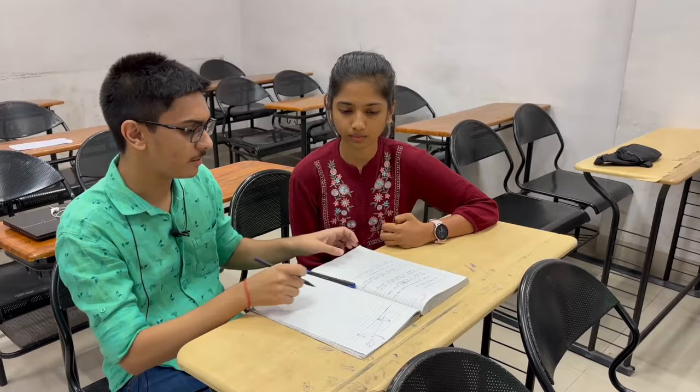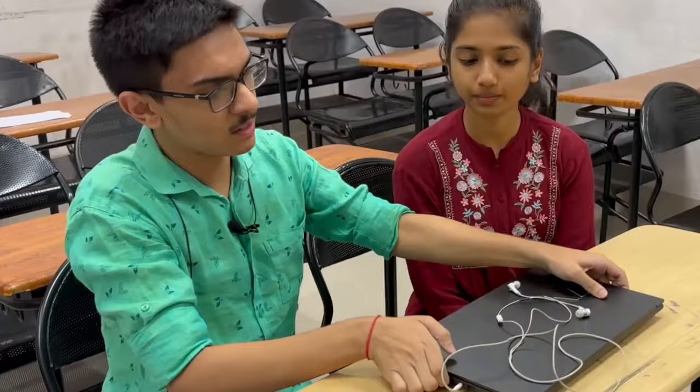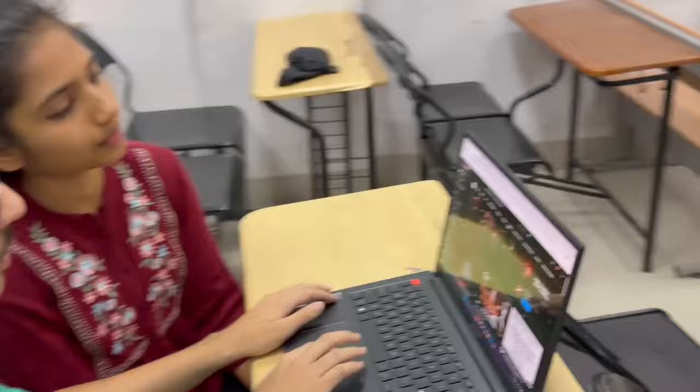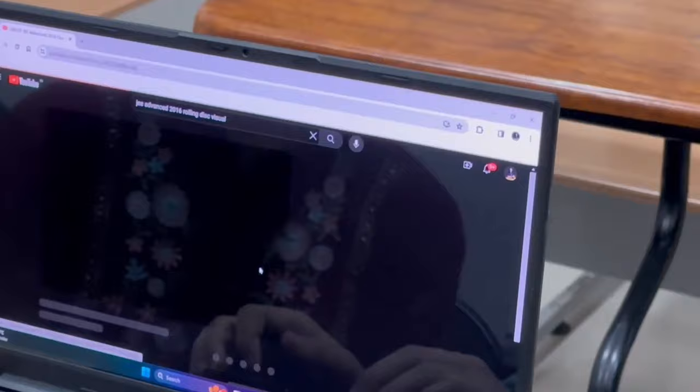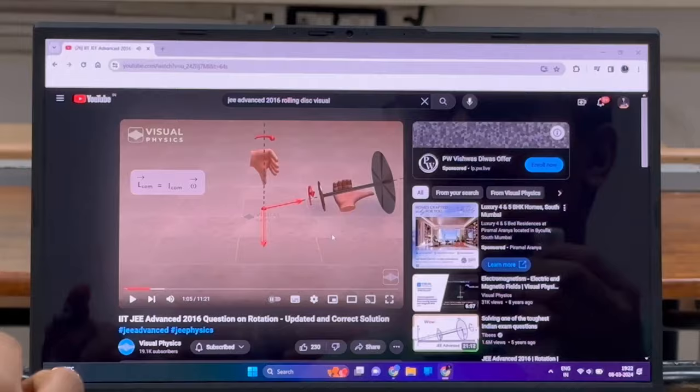If we want to search on physics in the past, we can look at JEE Advanced 2016 Rolling disk visualization. Visual physics.